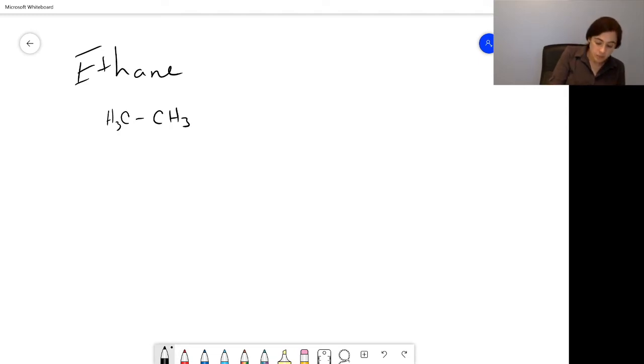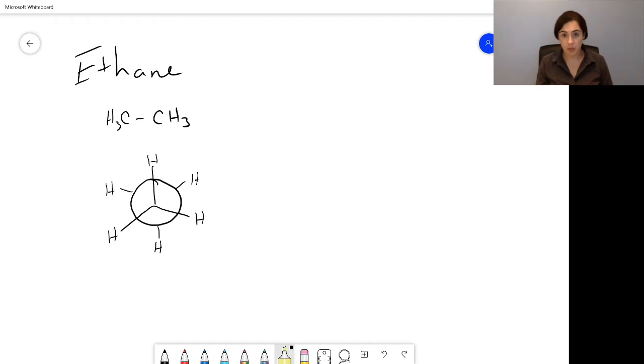In general we draw ethane in a staggered conformation. Again, if you're not familiar with that term, please go view the Newman projection video. But here is the staggered conformation of ethane. We're going to specifically highlight two of the hydrogens, one on the front carbon and one on the back, just to indicate where they are as we rotate them around the carbon-carbon bond. These two hydrogens are anti to each other as drawn.